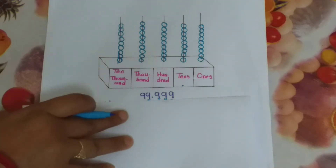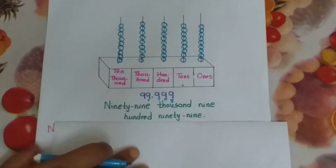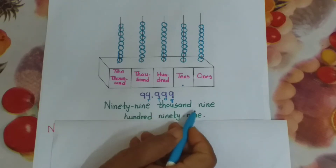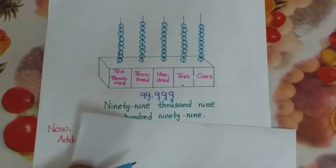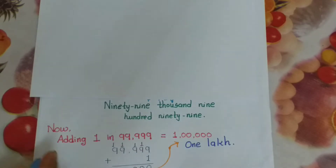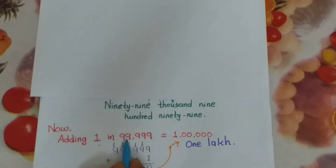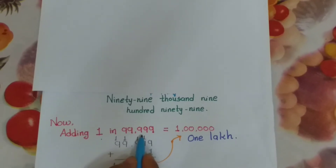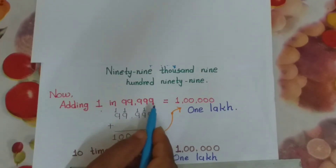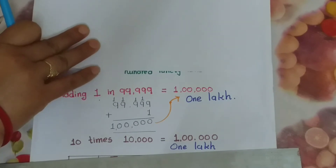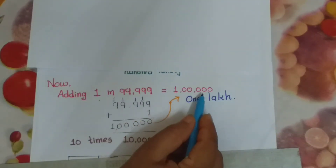Now see how we will read this: 99,999. Now if we add 1 to 99,999, then what answer do we get? 1 lakh.